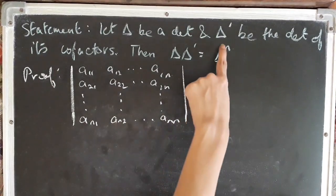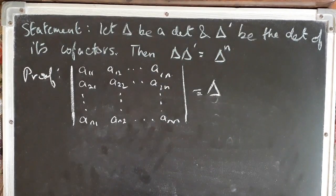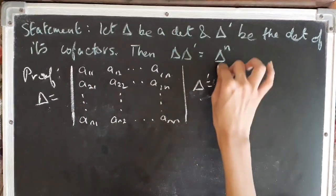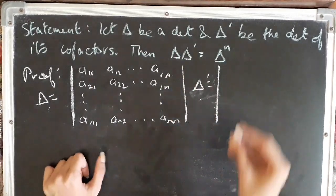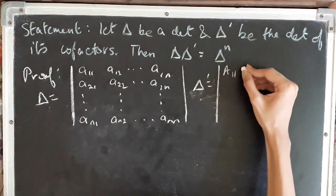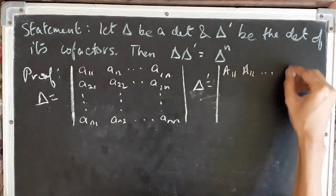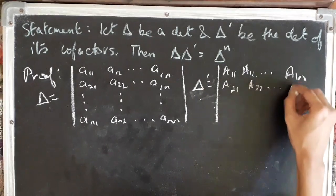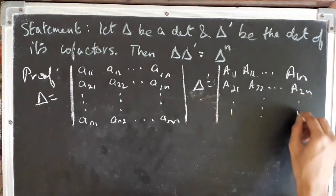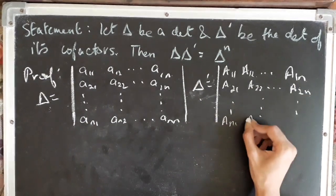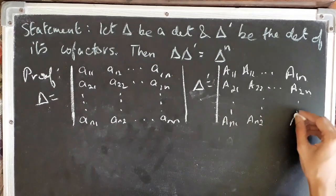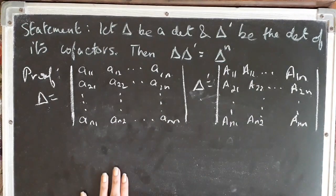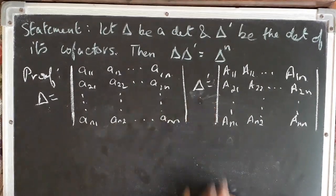Now, what is delta-dash? Delta-dash is the determinant of the corresponding cofactors. That is, it is: A11, A12, ... A1n; A21, A22, ... A2n; and similarly proceeding, An1, An2, ... Ann. So the theorem states that delta into delta-dash equals delta to the power n.